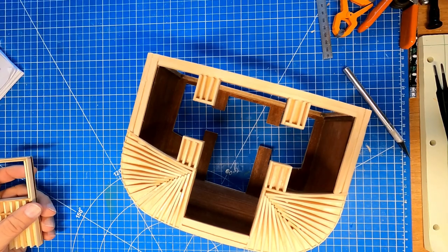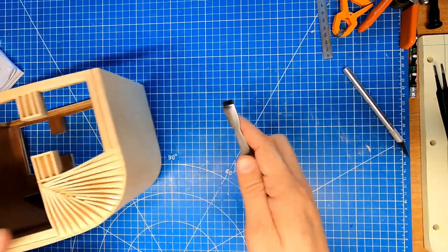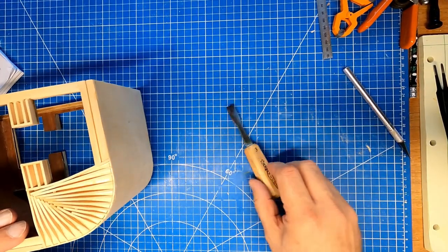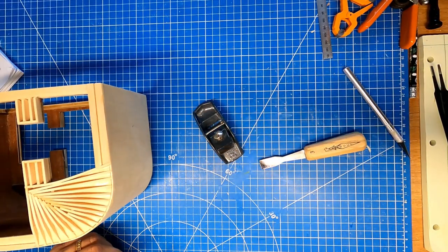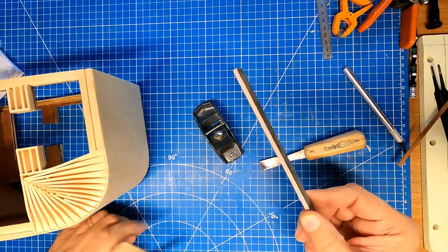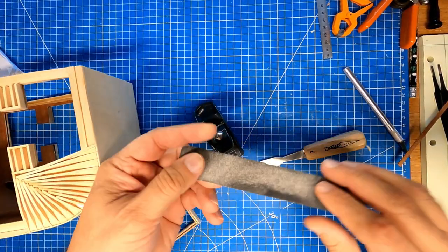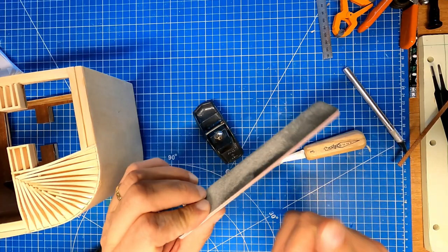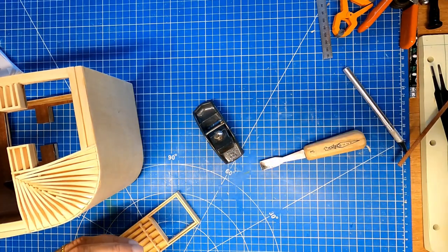But when I was sanding this, I used a gouge, plane, and a sanding stick. A nice, fairly stiff one, so it can still go around the curves but it doesn't bend and try to get weird divots and stuff.